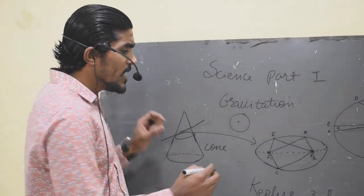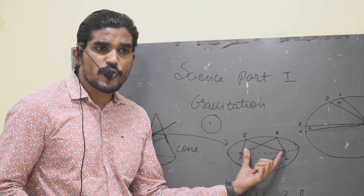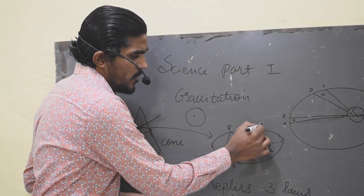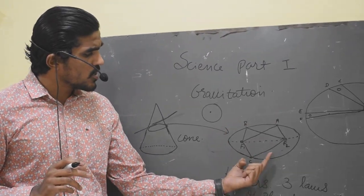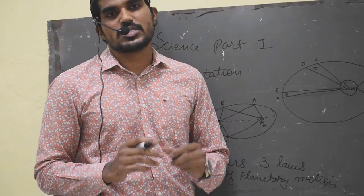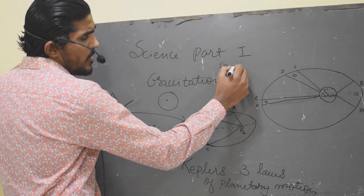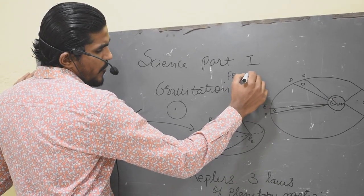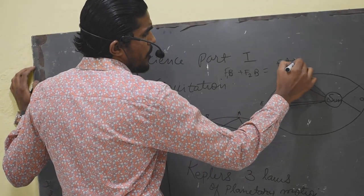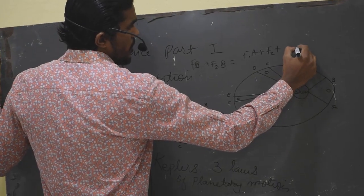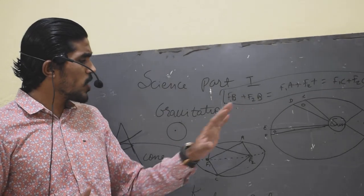One more important thing about ellipse: the sum of the distances of these two focal points — when you take the sum of the distances of the two focal points from any point on the curve — you get to know that all the distances are constant. For example: F1B plus F2B equals F1A plus F2A equals F1C plus F2C. They are all constant.